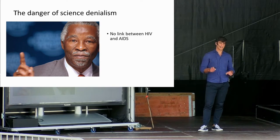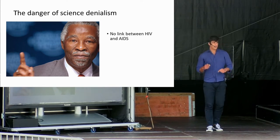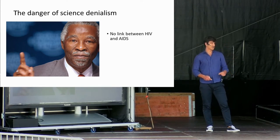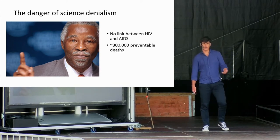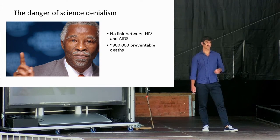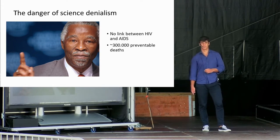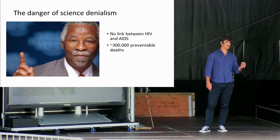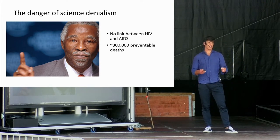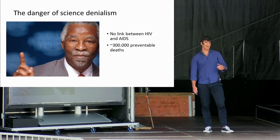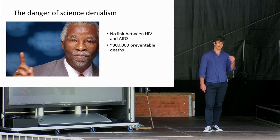He denied treatment to AIDS patients and suggested alternative cures such as garlic, beetroot, and lemon juice. His policies are now estimated to have led to more than 300,000 preventable deaths. Thabo Mbeki belongs to the growing number of people trying to deny, vilify, and reject scientific claims in a movement generally referred to as science denialism.